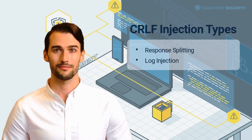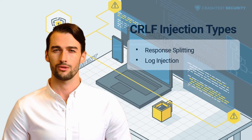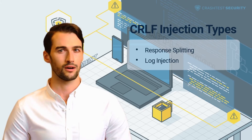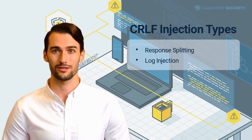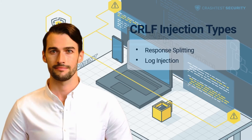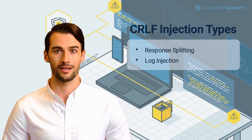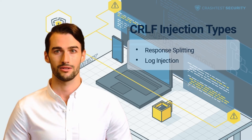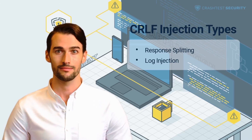A more accurate name for this type of injection is improper neutralization of CRLF sequences in HTTP headers — also known as response splitting. This name also describes the main vulnerability associated with the attack. If a server does not properly sanitize user-provided input, attackers can inject CRLF characters and a text sequence of their own, or inject HTTP headers, to force the server to perform a particular action.